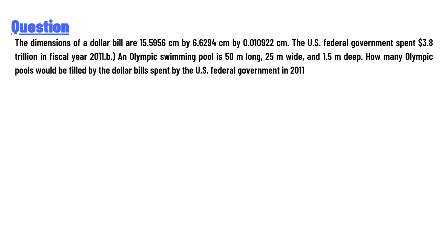The dimensions of a dollar bill are 15.5956 centimeters by 6.6294 centimeters by 0.0109222 centimeters. The U.S. federal government spent 3.8 trillion dollars in fiscal year 2011. An Olympic swimming pool is 50 meters long, 25 meters wide, and 1.5 meters deep. How many Olympic pools would be filled by the dollar bills spent by the U.S. federal government?